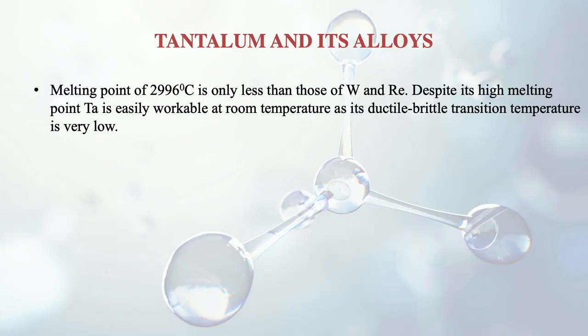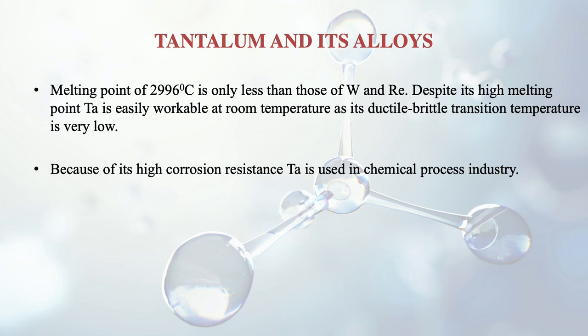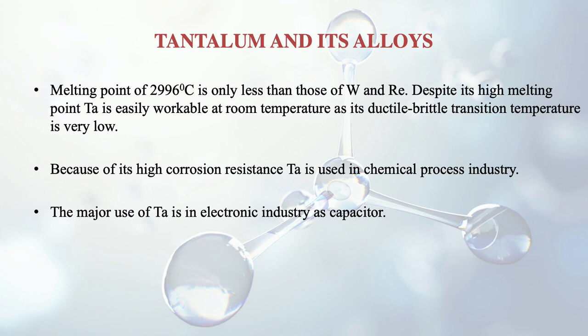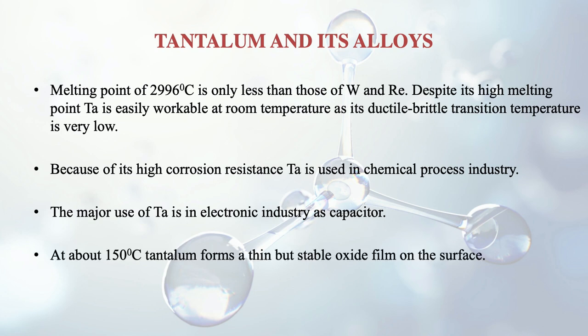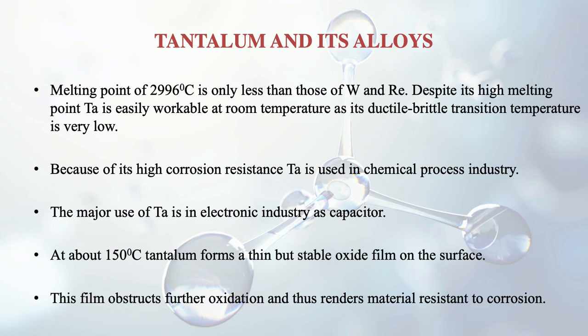Moving on to tantalum and its alloys: tantalum has a slightly higher melting point than niobium at 2996 degrees centigrade, and its melting point is less than only tungsten and rhenium. Despite its high melting point, tantalum is easily workable at room temperature as its ductile-to-brittle transition temperature is very low. It maintains ductility even at very low temperatures around 4K. Because of its high corrosion resistance, tantalum is used in the chemical process industry. Its major use is in the electronic industry as a capacitor. At about 150 degrees centigrade, tantalum forms a thin but stable oxide film on the surface, which obstructs further oxidation and renders the material resistant to corrosion.